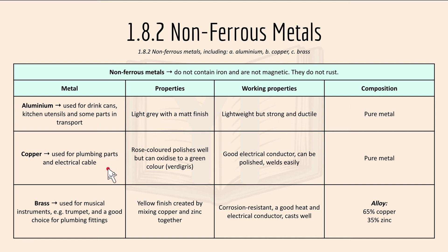Copper is used for plumbing parts and electrical cable. It's rose-coloured when polished but can oxidise to a green colour. For working properties, it's a good electrical conductor and can be polished and worked easily. Composition is pure metal as well, as copper is an element on the periodic table.